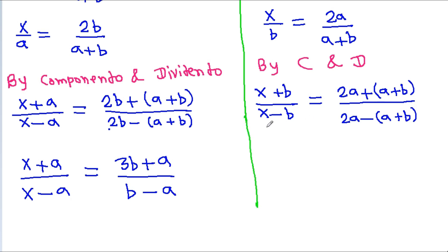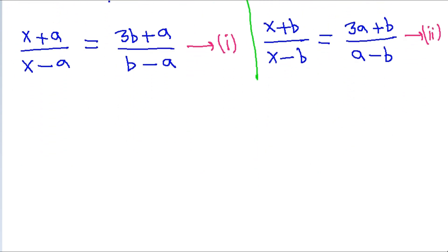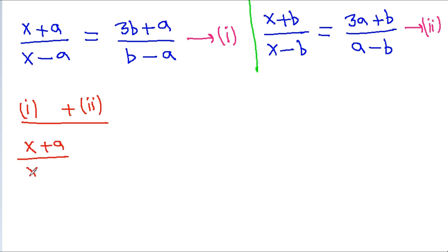From here we can get x plus b by x minus b is equal to a plus 3b by a minus b. We count this as equation 1 and this as equation 2. Now if we add equation 1 and equation 2, we can get x plus a by x minus a plus x plus b by x minus b.